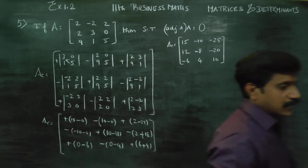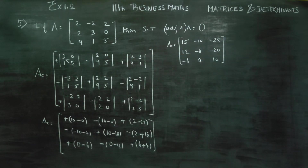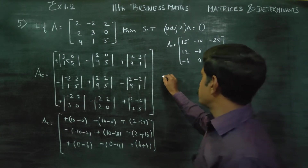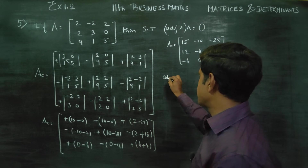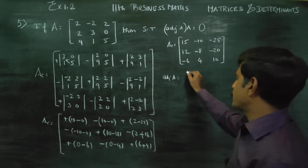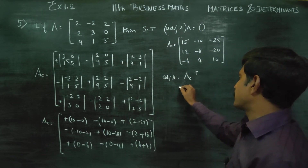To find the adjoint matrix, we transpose the cofactor matrix. What the adjoint matrix is: cofactor matrix transposed. So the adjoint matrix is the transpose of the cofactor matrix.